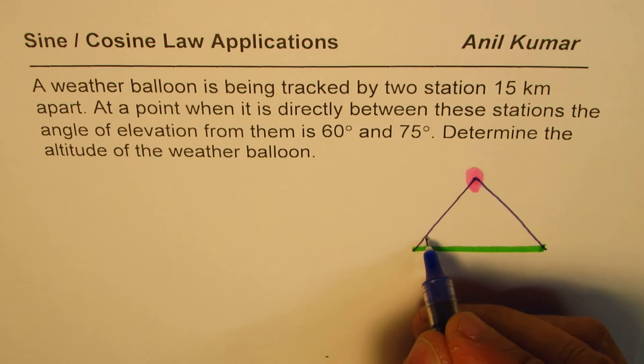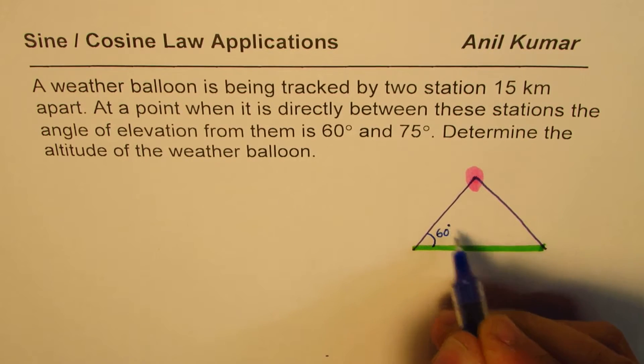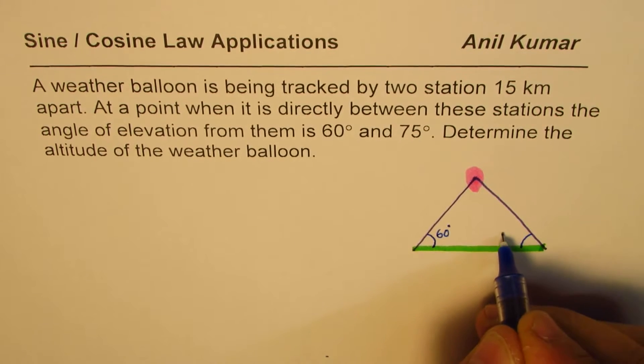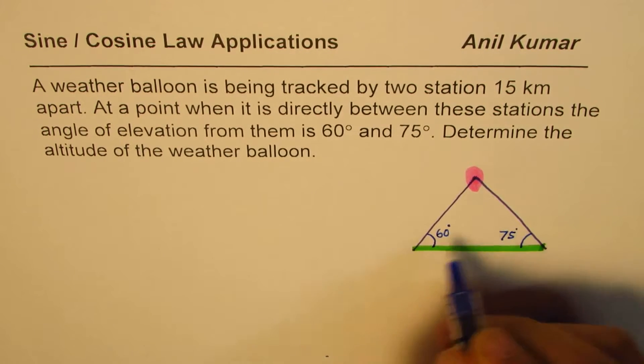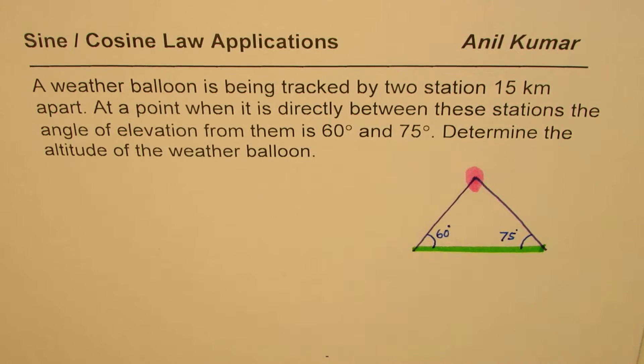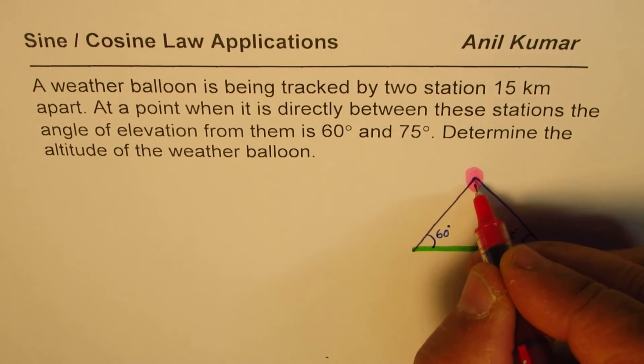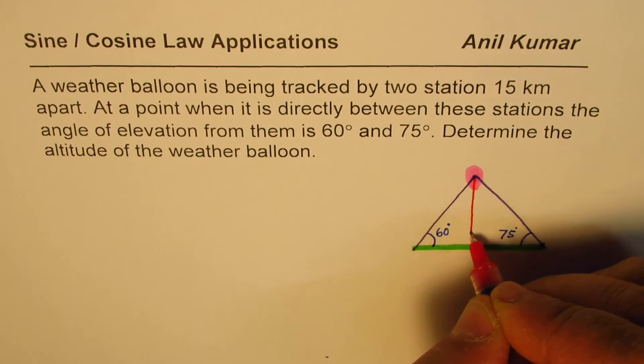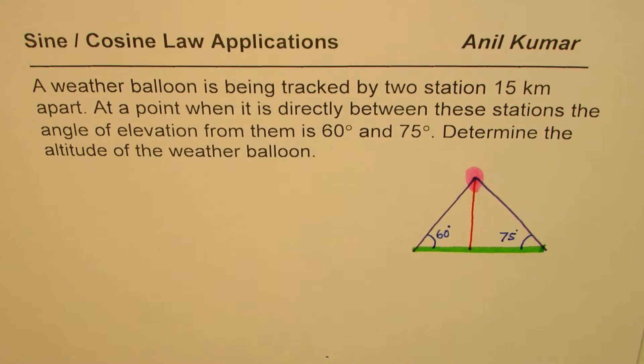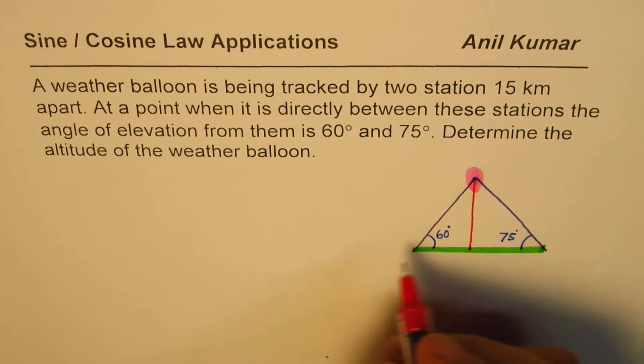Let's write this as 60 degrees and the other one as 75 degrees. That is the situation given to us. What do we need to find? Determine the altitude, that means the height of this balloon. So we need to find the height of this balloon.